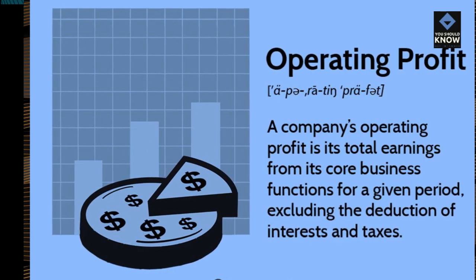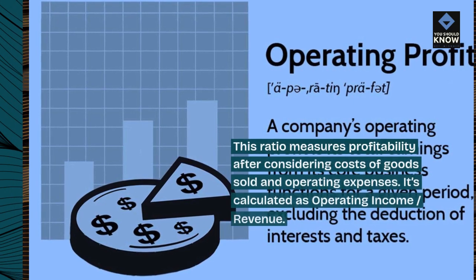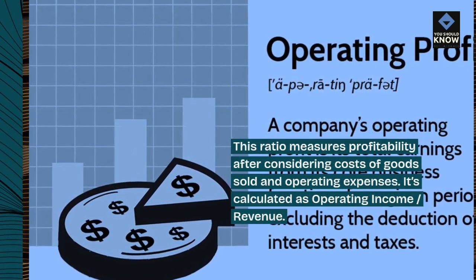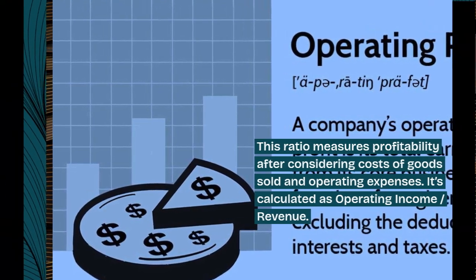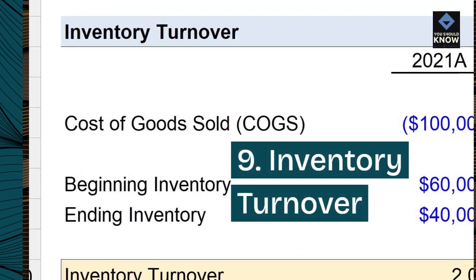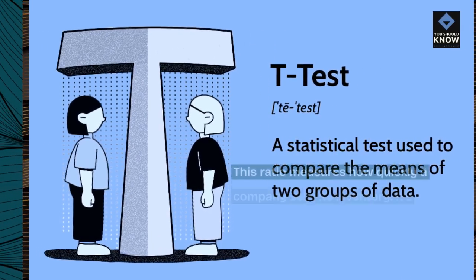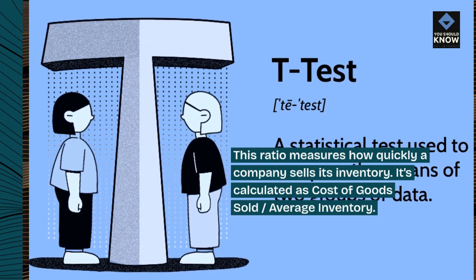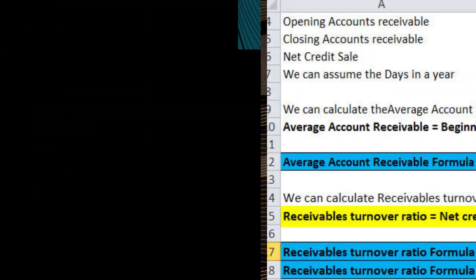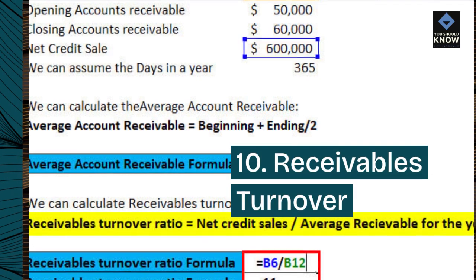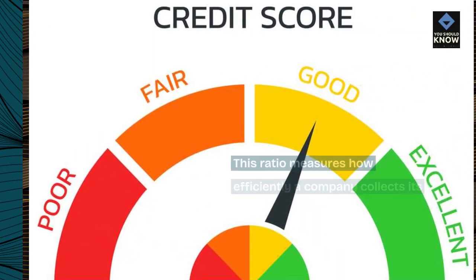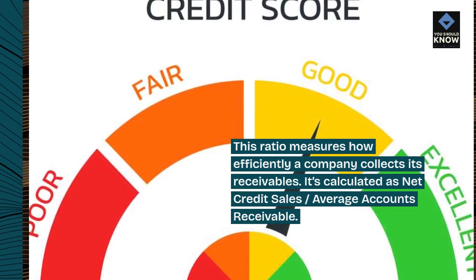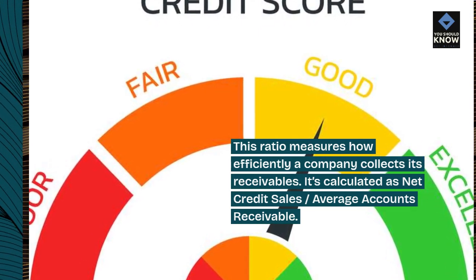8. Operating margin. This ratio measures profitability after considering costs of goods sold and operating expenses. It's calculated as operating income divided by revenue. 9. Inventory turnover. This ratio measures how quickly a company sells its inventory. It's calculated as cost of goods sold divided by average inventory. 10. Receivables turnover. This ratio measures how efficiently a company collects its receivables. It's calculated as net credit sales divided by average accounts receivable.